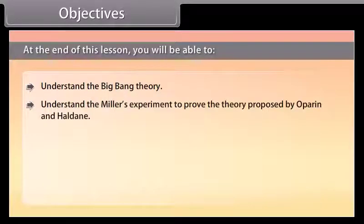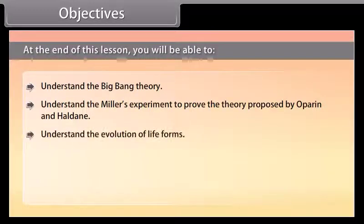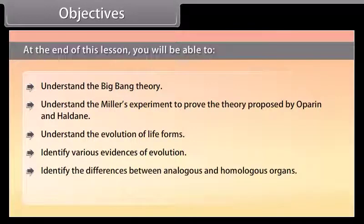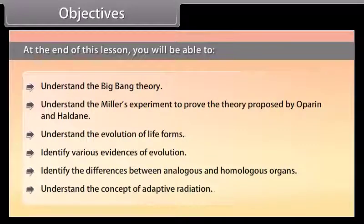Objectives. At the end of this lesson, you'll be able to understand the Big Bang Theory, understand the Miller's experiment to prove the theory proposed by Oparin and Haldane, understand the evolution of life forms, identify various evidences of evolution, identify the differences between analogous and homologous organs, and understand the concept of adaptive radiation.